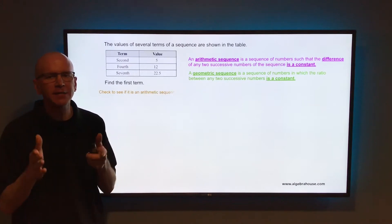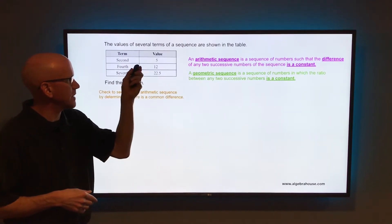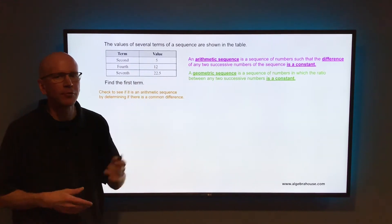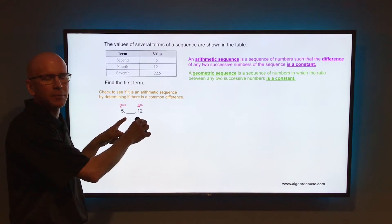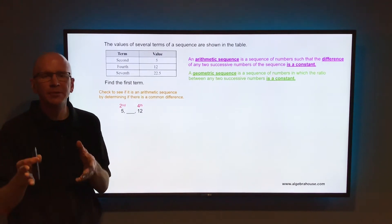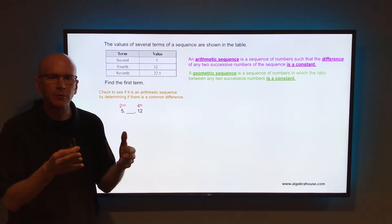So to find out if that is an arithmetic sequence, we're going to go from that second term of 5 to that fourth term of 12. Now when you go from that second term of 5 to that fourth term of 12, you're making two jumps. Each comma represents a jump. Each comma represents that common difference that you're adding or subtracting.